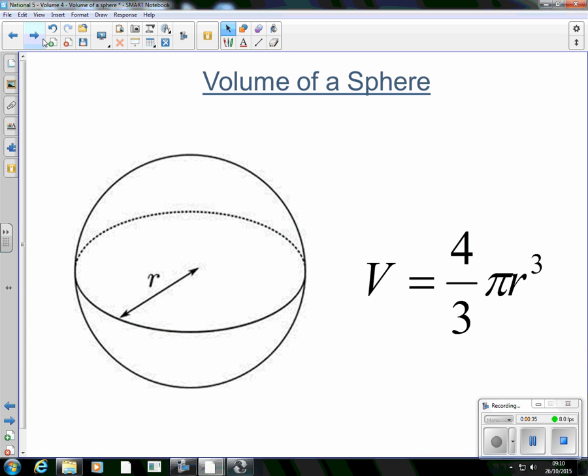Now there's your first page of your notes, volume of a sphere. The volume of a sphere is given by the formula 4 thirds multiplied by pi r cubed. Now it may look a little bit more daunting, but in reality it's quite easy to use this one.